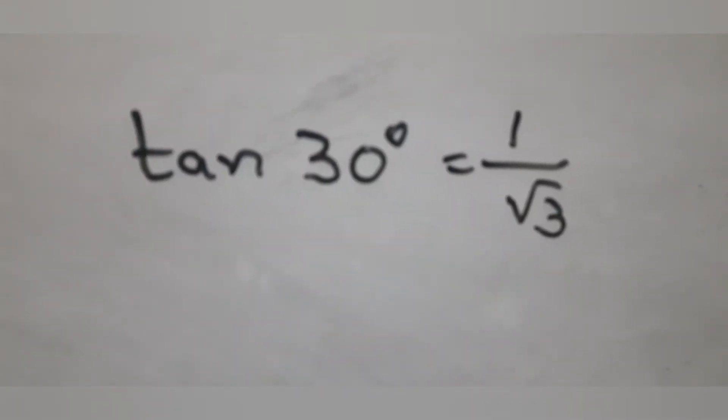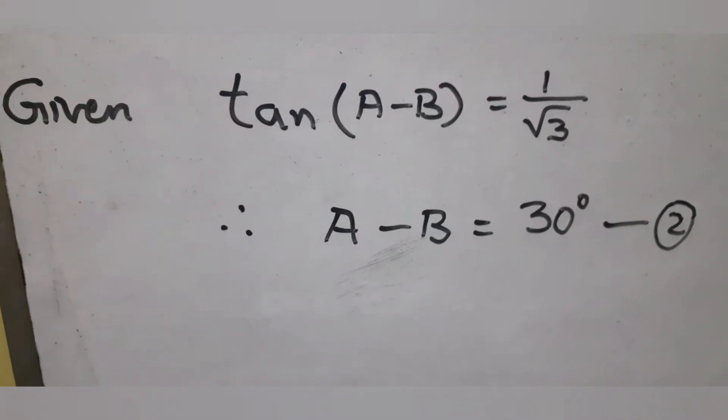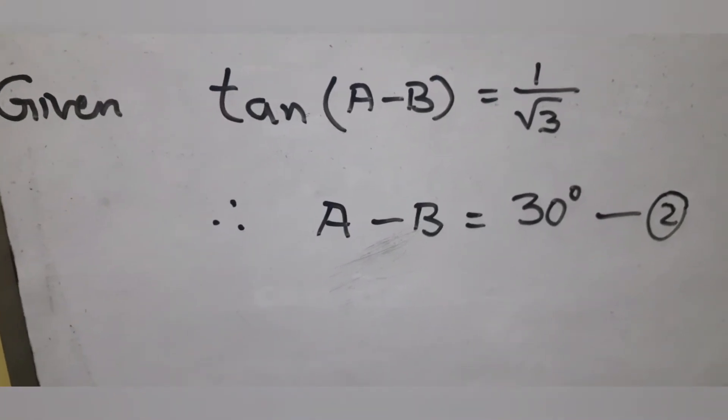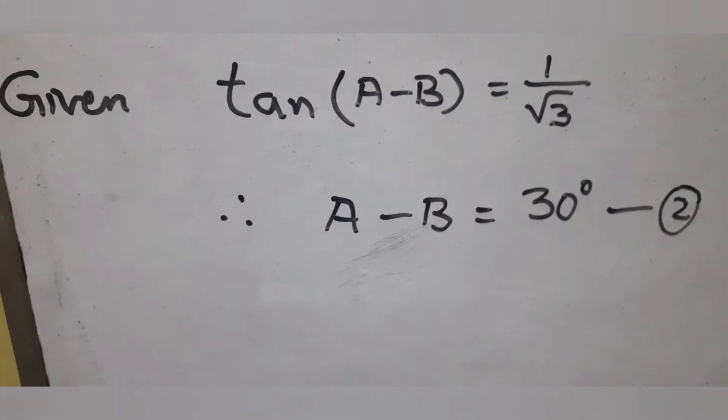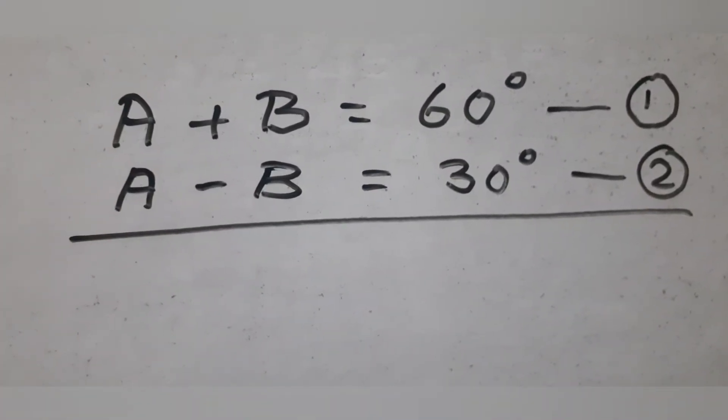We now have two equations in A and B. We use the elimination method to find A and B.